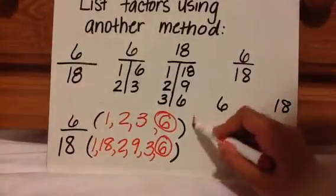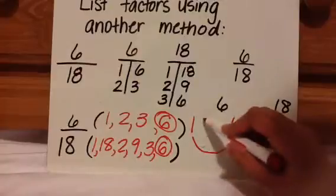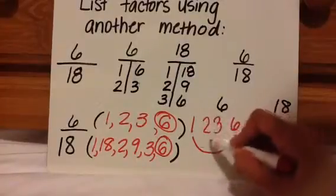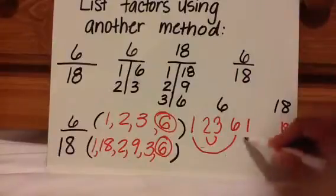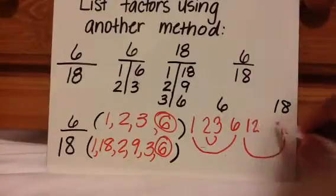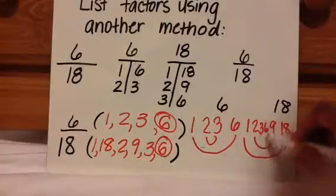Another way is called the rainbow method. You write 1 times 6 and you draw the rainbow to show they are connected, and then 2 times 3. For 18: 1 times 18, 2 times 9, 3 times 6.